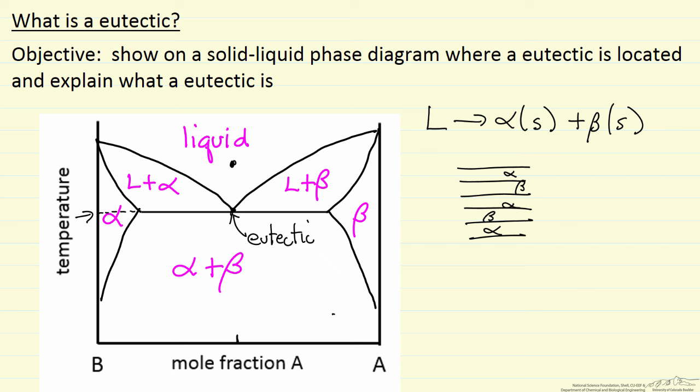This laminar structure can certainly form other rod structures and globular structures, but let's just look at this laminar structure. It's certainly the most common.